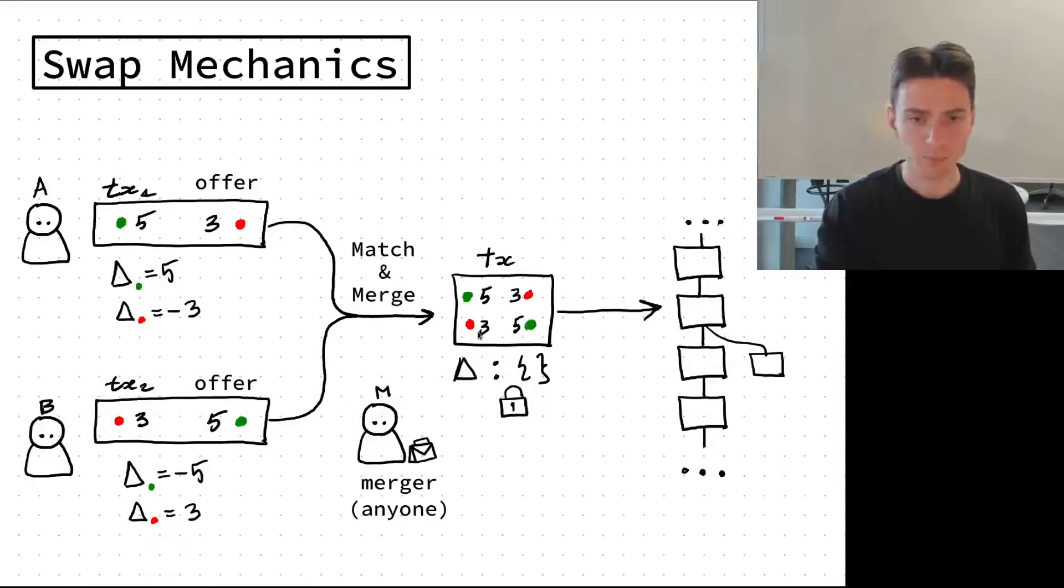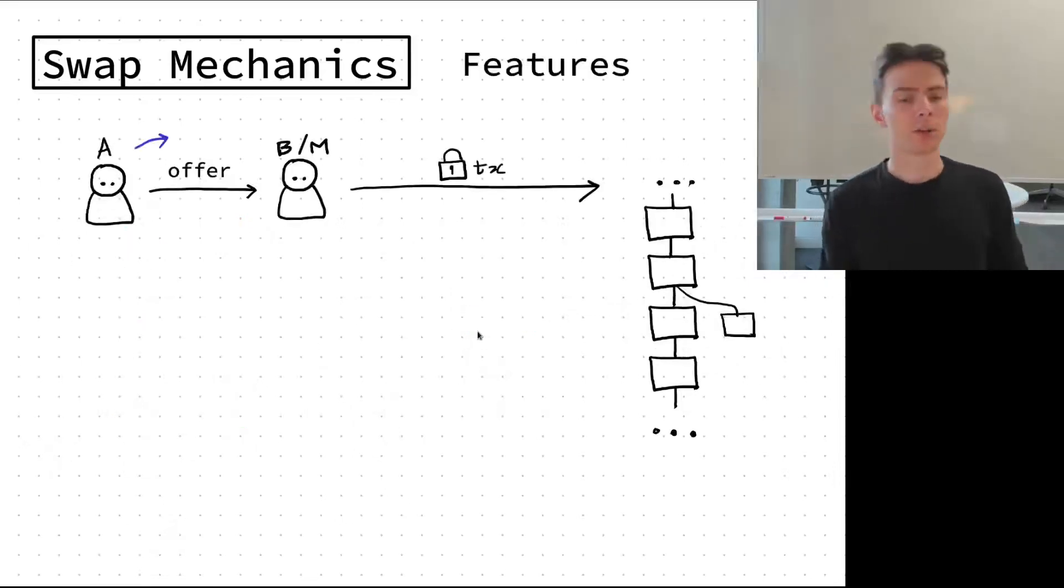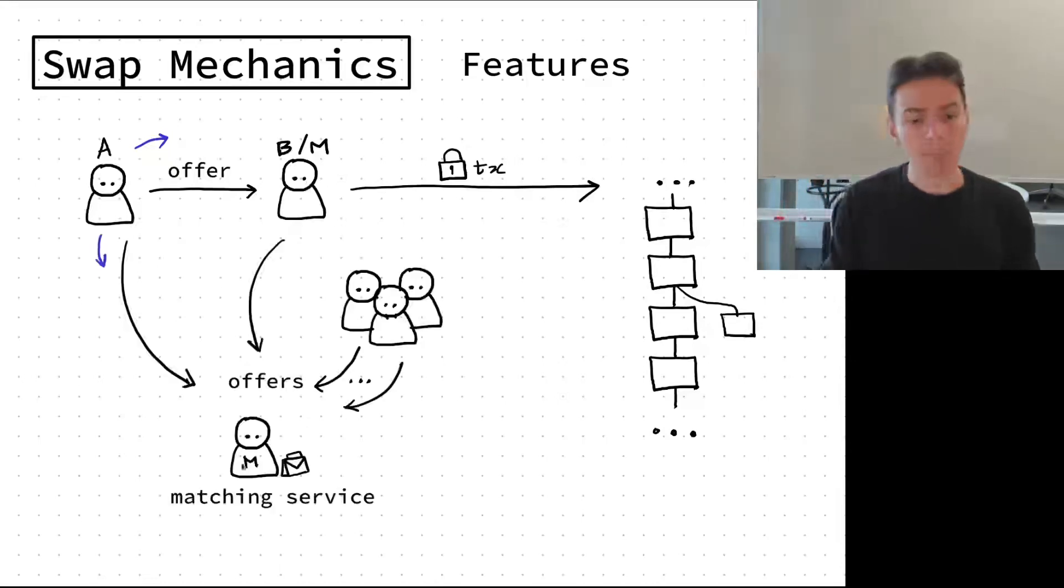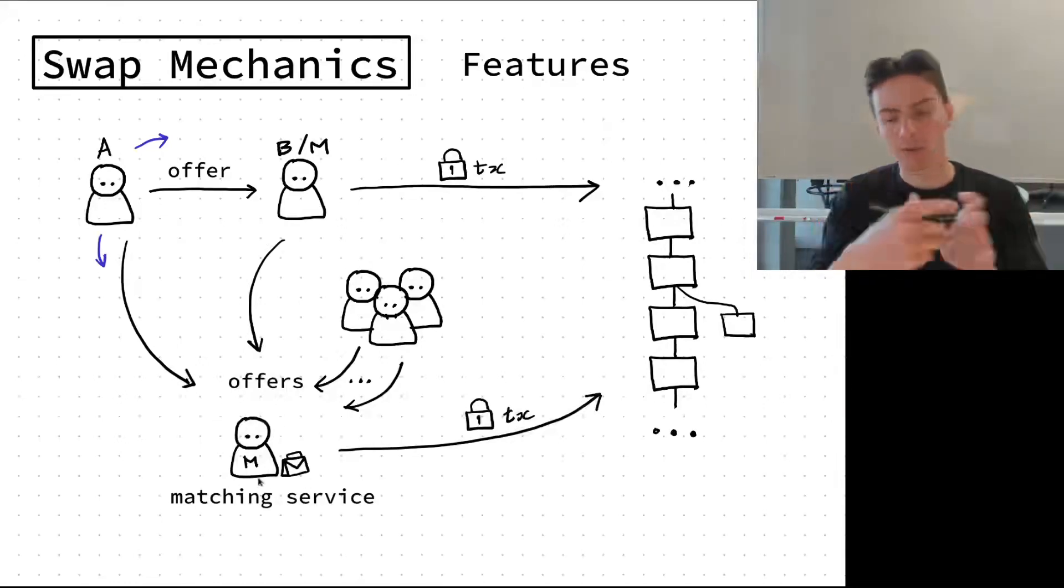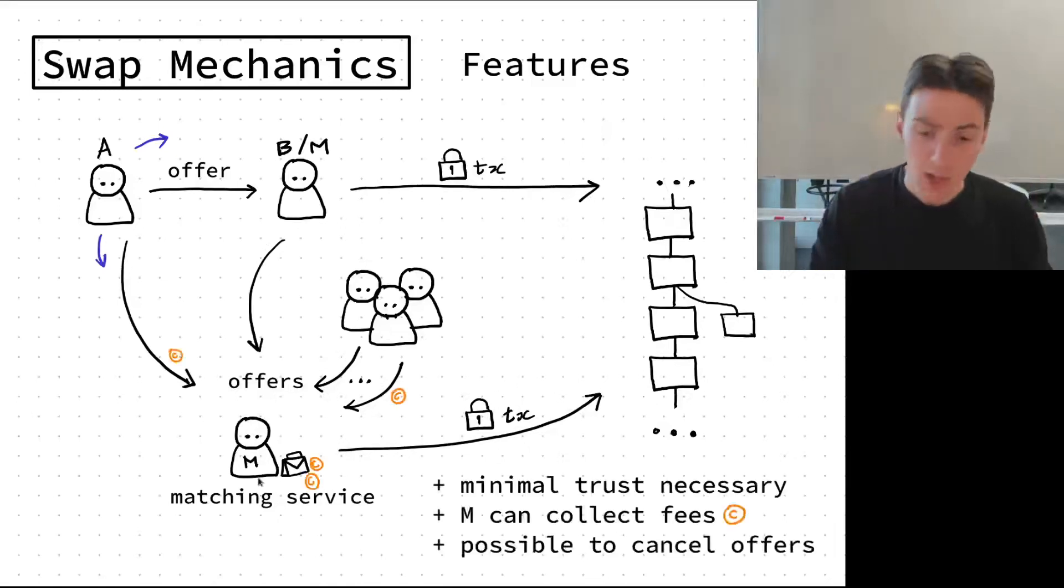There are different ways that user A can send this offer to different parties. For example, A can try to swap some funds with B by sending an offer directly to B, and then B creates its own offer, matches and merges the transactions together and sends to the blockchain. At the same time there might be a party called matching service that collects lots of different offers and then merges them all together, maybe implementing some additional mechanics like an exchange platform where you see different offers and try to match those which can be matched.